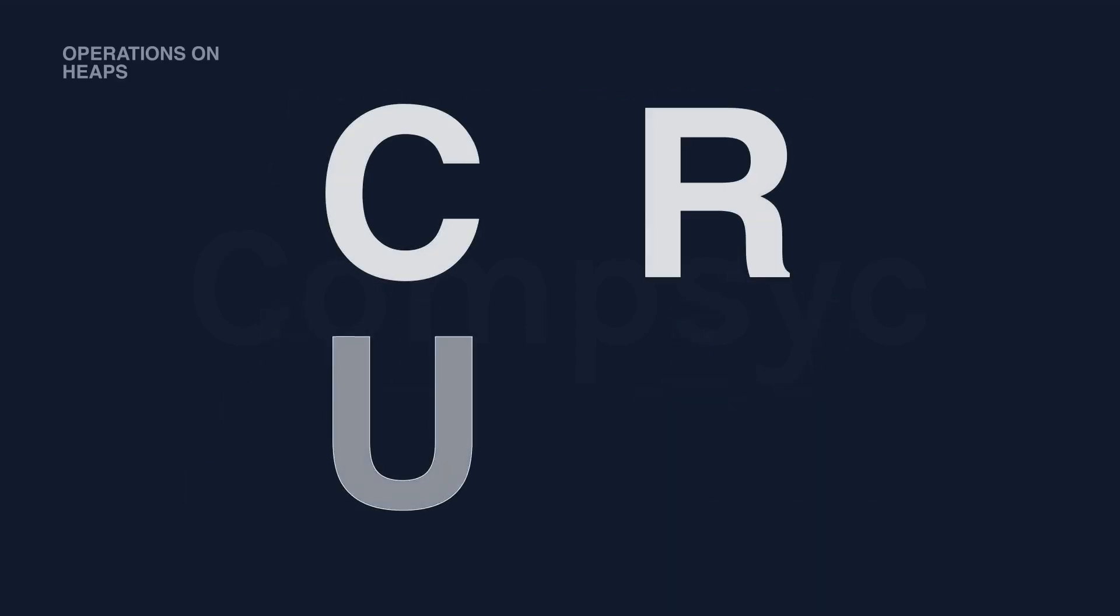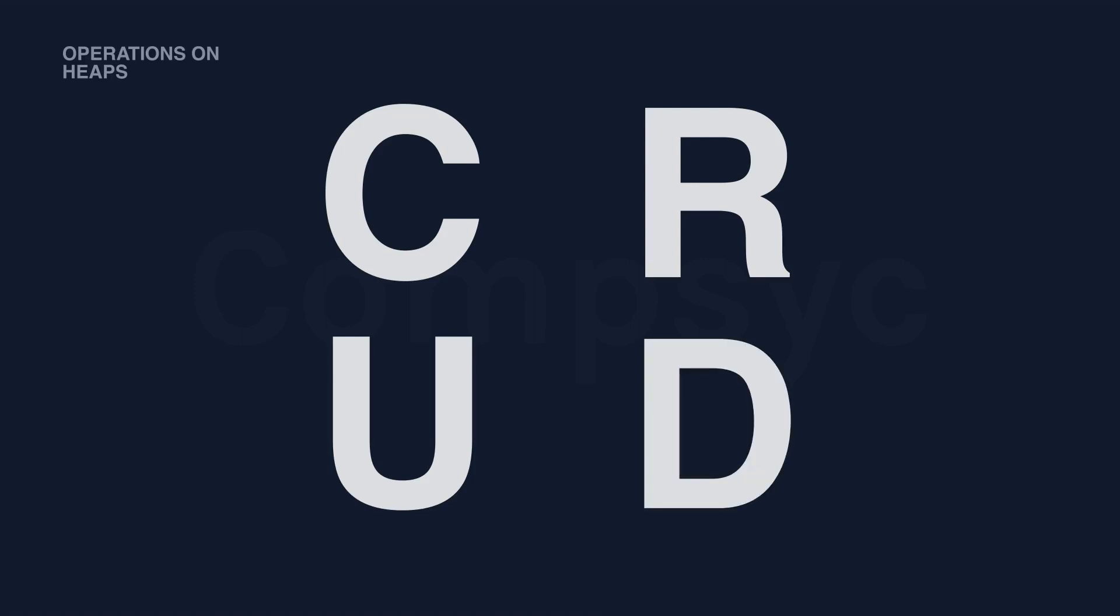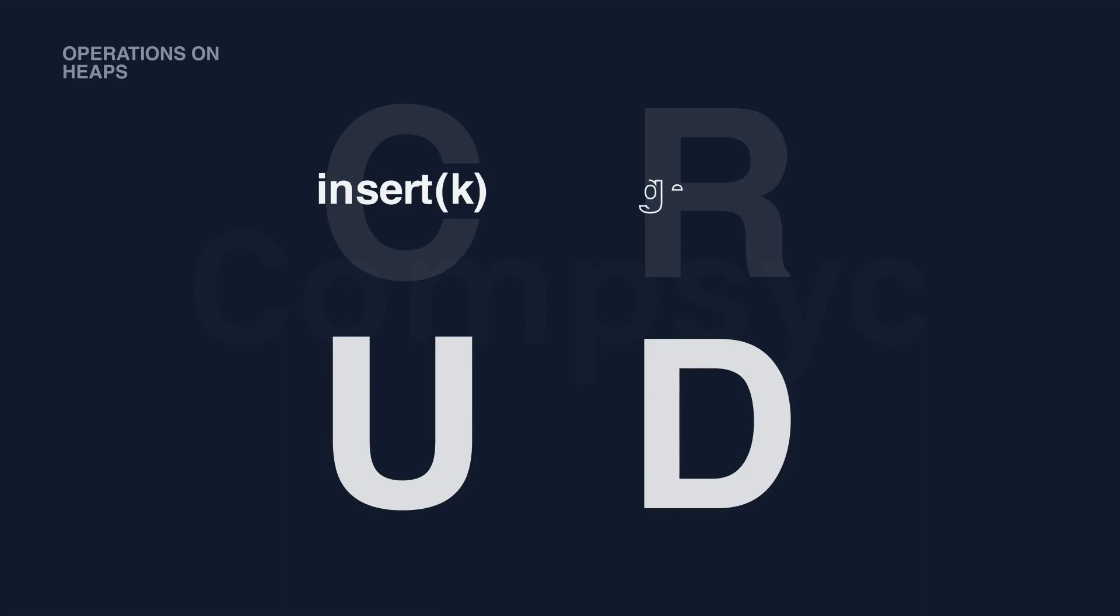We can start from CRUD, which is create, read, update, and delete. These are basic operations that almost any data structure should provide to users. For create, the operation is to insert a value K into the current heap. For read, while this operation is very important, since the functionality of a heap is to provide max or min, this operation gets a max value if it's a max heap or gets the min value if it's a min heap. It doesn't get values other than max or min.